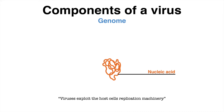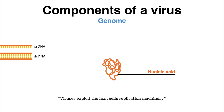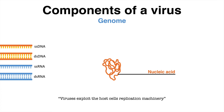Viruses are often classified according to the type of nucleic acid. Some viruses have a genome made of single-stranded DNA, others possess double-stranded DNA. There are also viruses with single-stranded RNA or double-stranded RNA as genetic information.